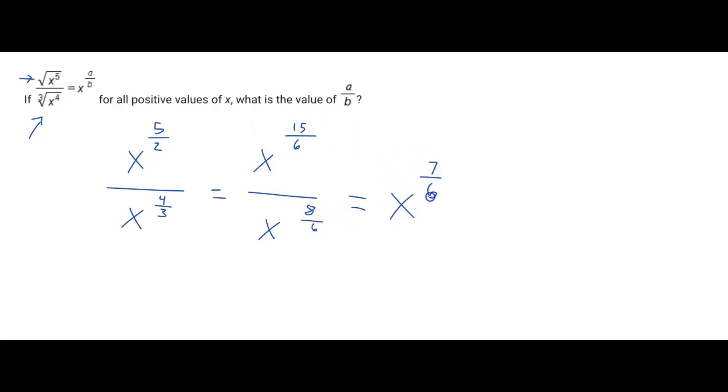And so ultimately, they want to find the value of a over b. And we can see a over b is just the power above x. And there is your answer. So the answer here is 7 over 6.